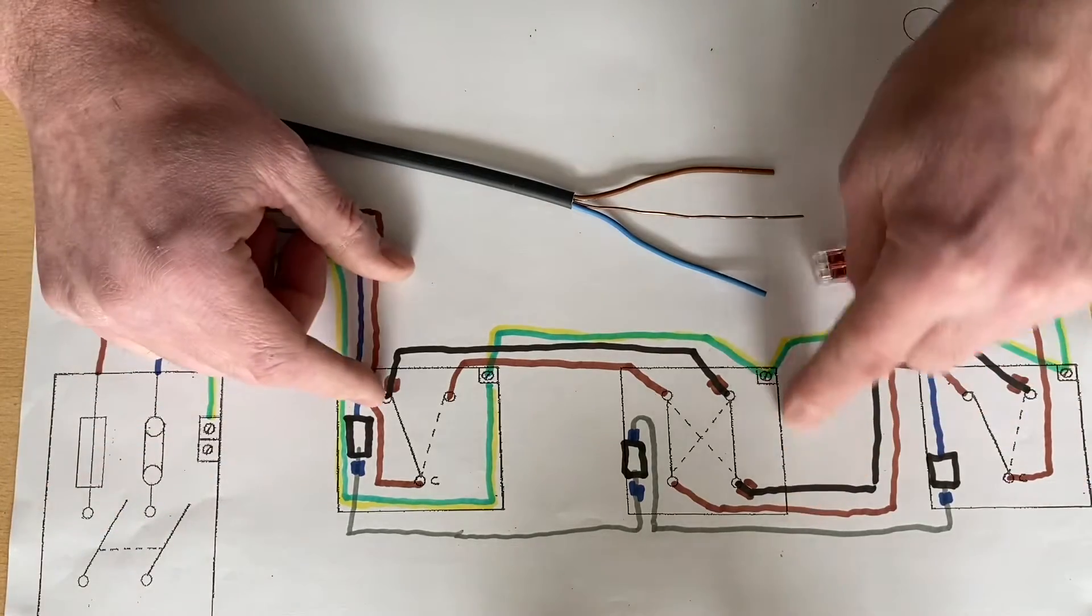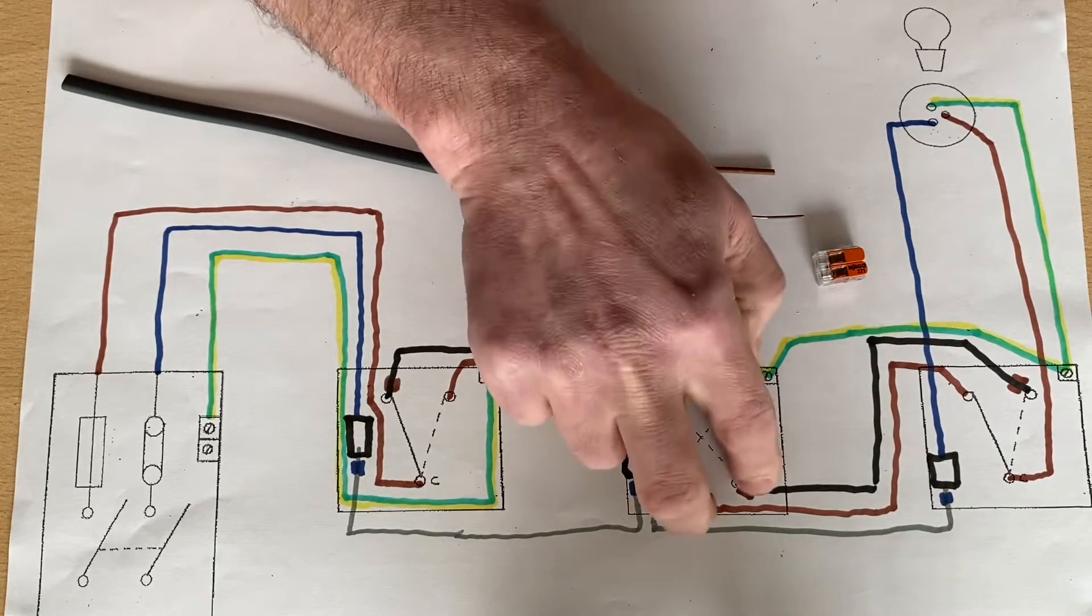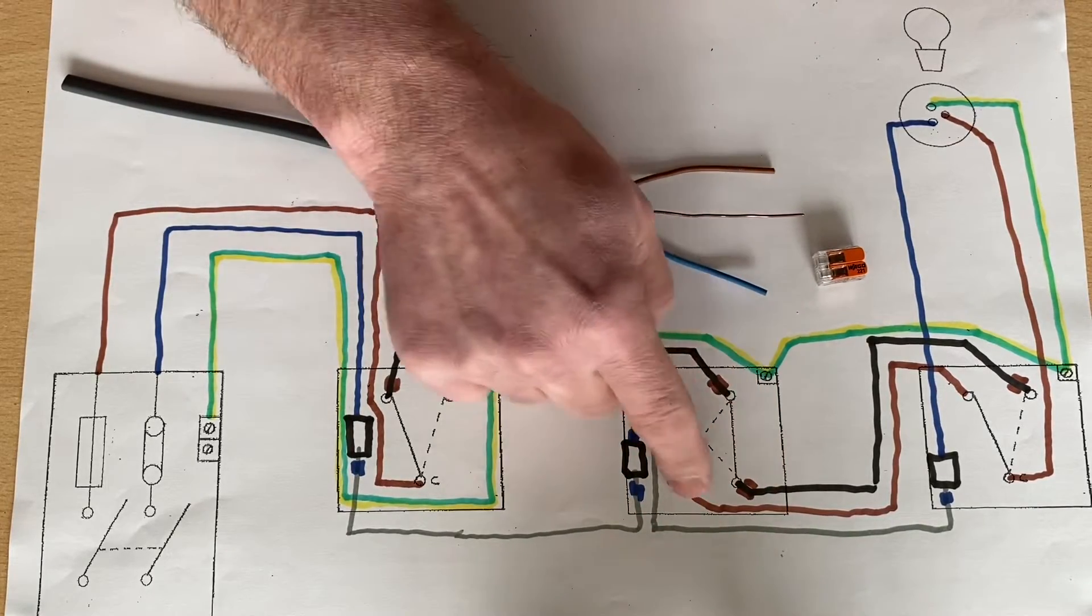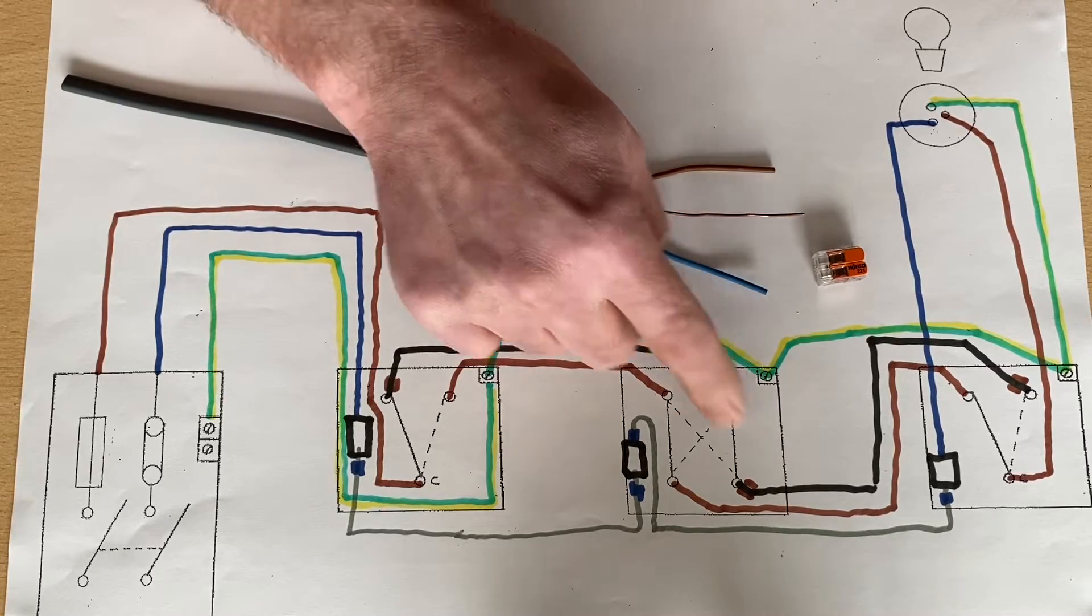And the same process repeats here. So you might have a neutral and a CPC, but you've got your strappers here. And you can't guarantee that they're going to remain permanently connected to the line conductor at all times in order to take a feed to another room.